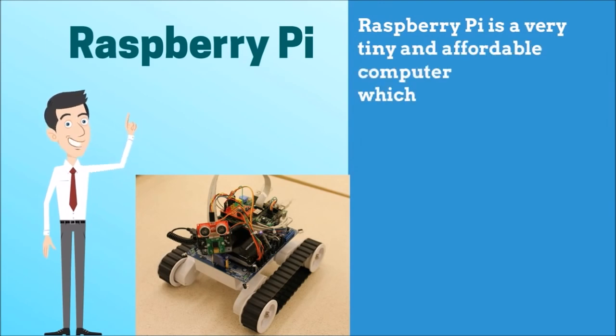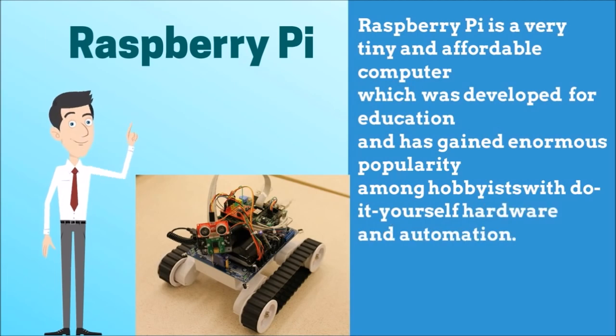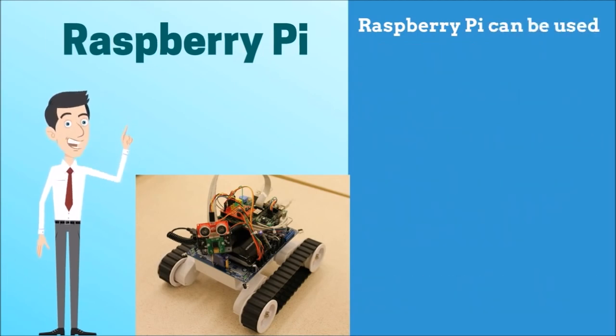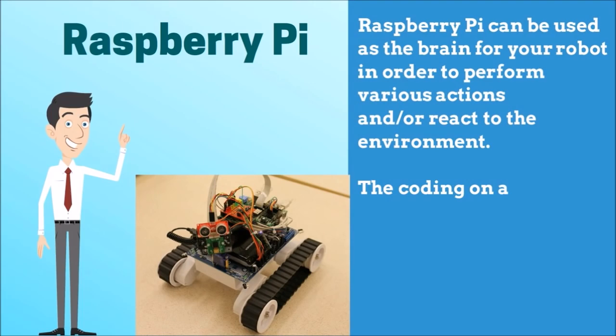Raspberry Pi is a very tiny and affordable computer which was developed for education and has gained enormous popularity among hobbyists with do-it-yourself hardware and automation. You can even build a robot and automate your home. Raspberry Pi can be used as the brain for your robot in order to perform various actions and or react to the environment. The coding on a Raspberry Pi can be performed using Python.